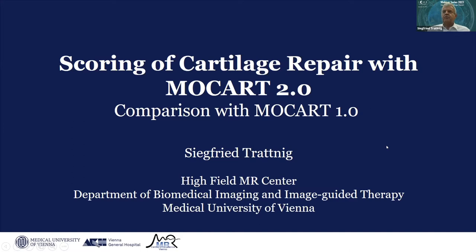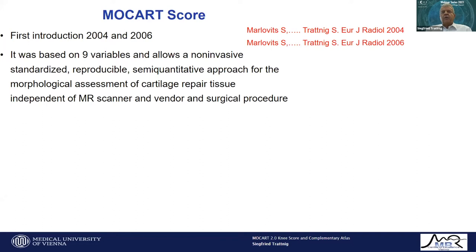Thank you, Stefan, for the kind introduction. In my presentation I will discuss the scoring of the modified MOCAD score, now called the MOCAD 2.0 knee score, and make a comparison with the original MOCAD score. As you heard, the MOCAD score was developed by Stefan Malowitz and me — I remember the several night shifts at the General Hospital of Vienna. We published the first version in 2004 and a slightly modified version in 2006. The original MOCAD score is based on nine variables and allows a non-invasive, standardized, reproducible, semi-quantitative approach for morphological assessment of cartilage repair tissue, independent of MR scanner type or vendor, and of the surgical procedure.